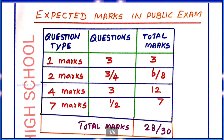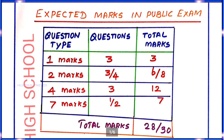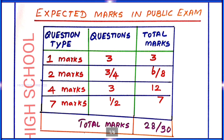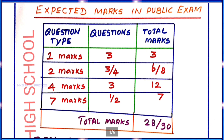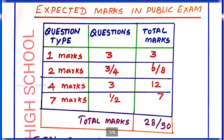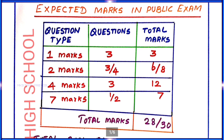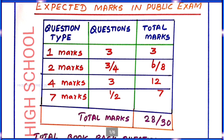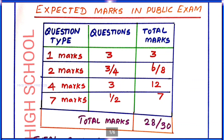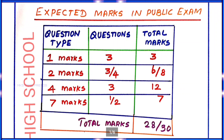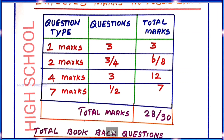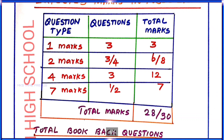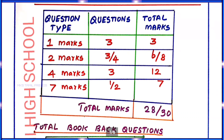The first part is Accepted Marks in Public Exam. The question types are: 1 Mark, 2 Marks, 4 Marks, and 7 Marks. Here are the total marks — 28 marks for Chemistry and Biology.